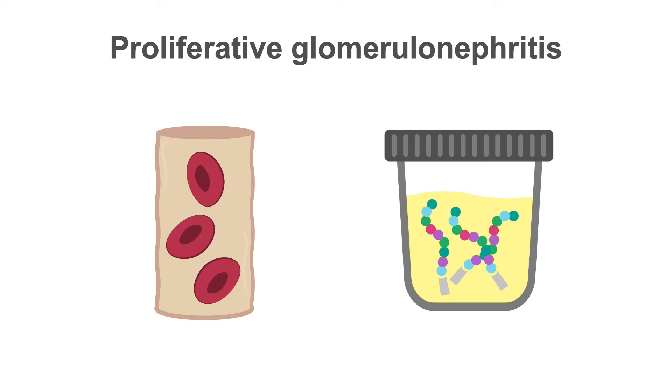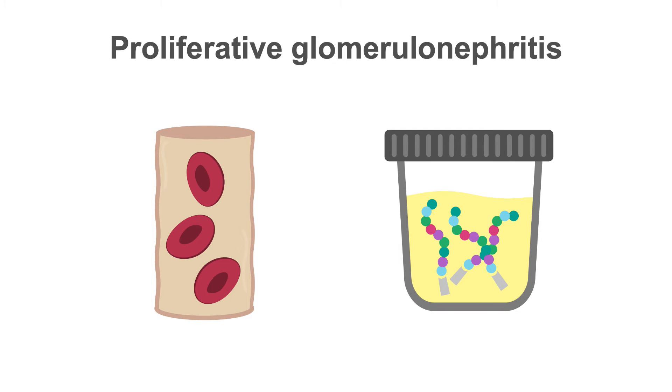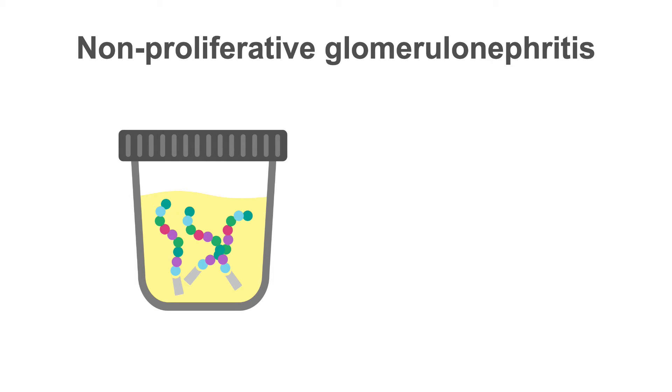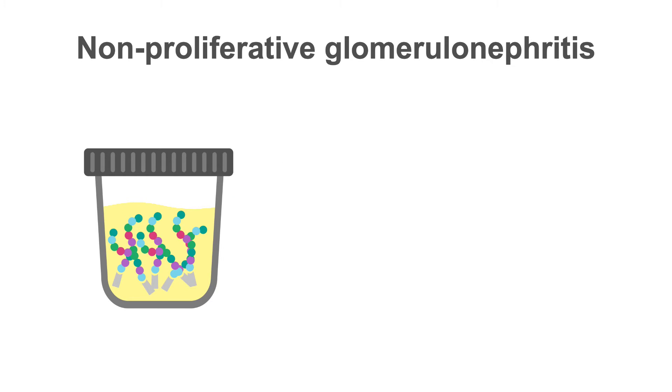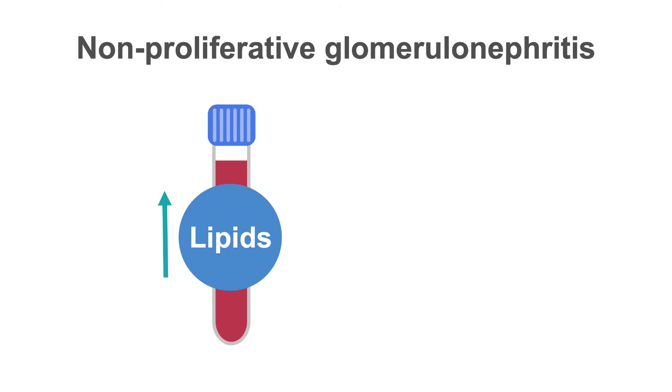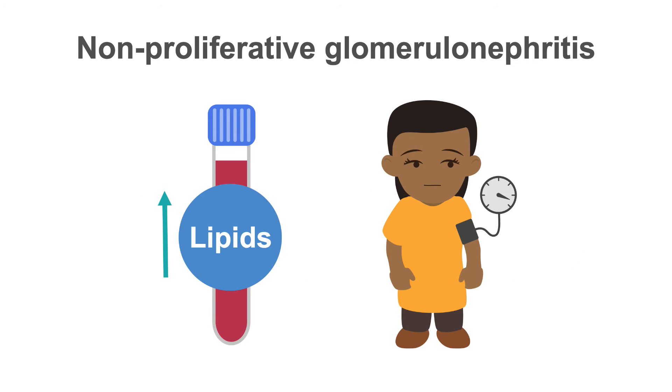Red blood cell casts and mild to moderate proteinuria also occur. Non-proliferative glomerulonephritis may present with proteinuria or hematuria or with nephrotic syndrome: severe proteinuria, edema, hypoalbuminemia, hyperlipidemia and hypertension.